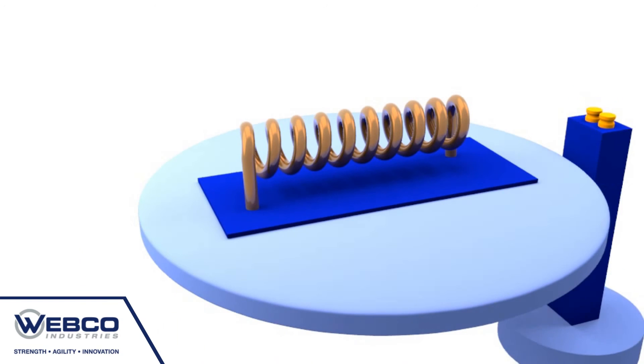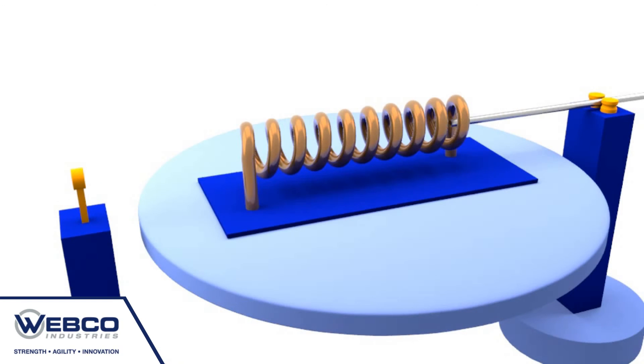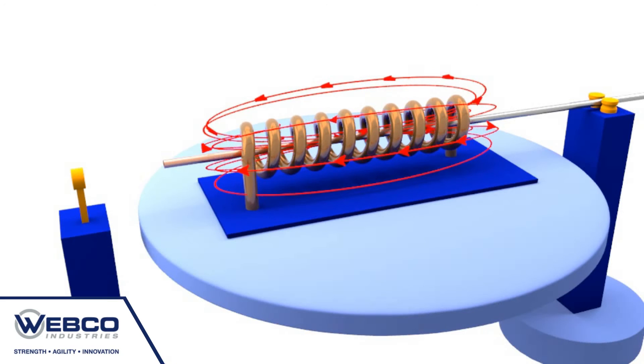To relax stresses in the tube and refine the welds, the tube passes through an inline induction coil, which takes it to an anneal temperature where the tube undergoes a full solution heat treatment.